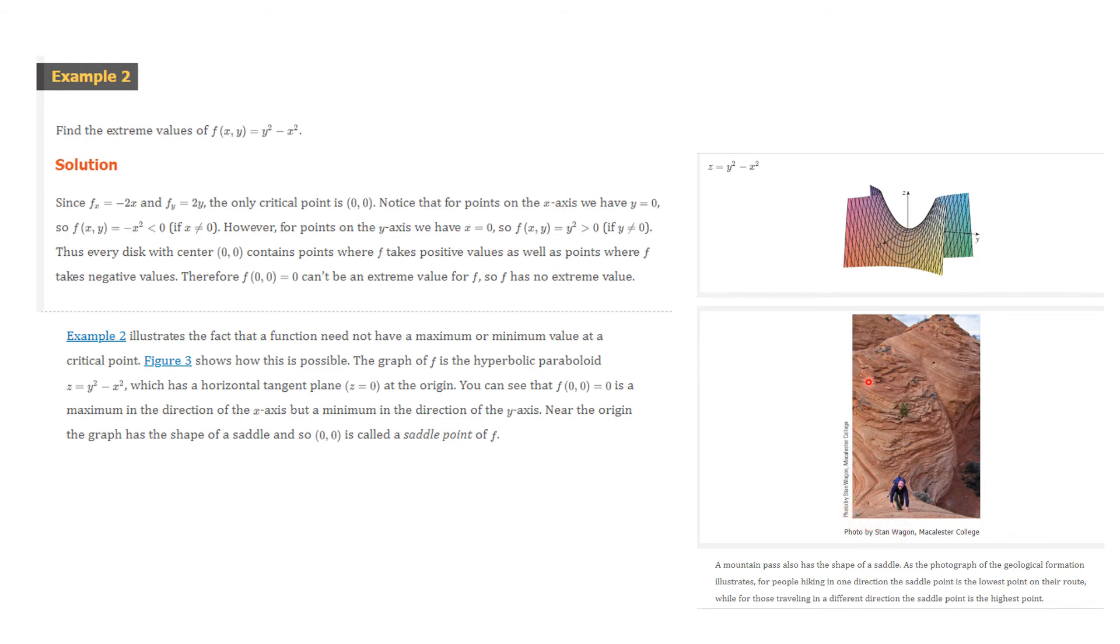We have a minimum with respect to y and we have a maximum with respect to x at the point 0, 0. So, it's not an extreme point. It's a saddle point. Now, saddle points do exist in the real world. Look at this guy on a mountain trail who's walking this way. That's the low point, but there's another trail that could be coming up this way and that's a high point. So, you see, this is what we will call a saddle point. And again, we're just developing examples and terminology.